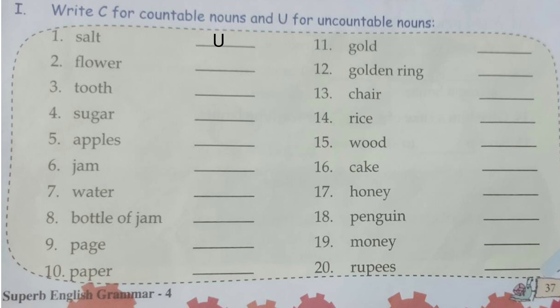Flour — flour is uncountable. Tooth — tooth is countable; we have 32 teeth. Sugar is uncountable. Apples — countable. Jam — uncountable. Water — uncountable. However, a bottle of jam is countable — you can count 1 bottle, 2 bottles, 3 bottles of jam — but jam itself is uncountable.